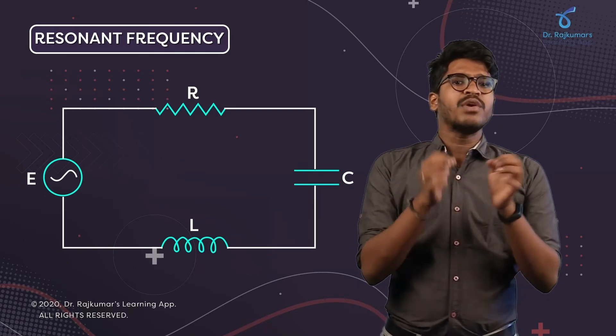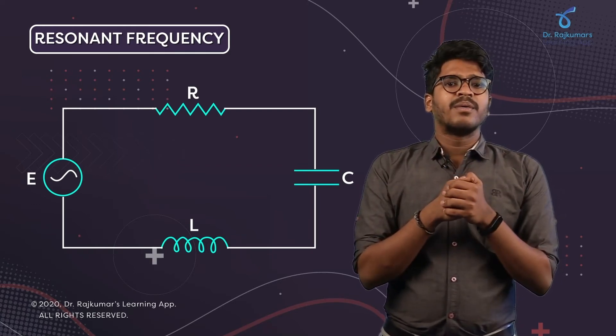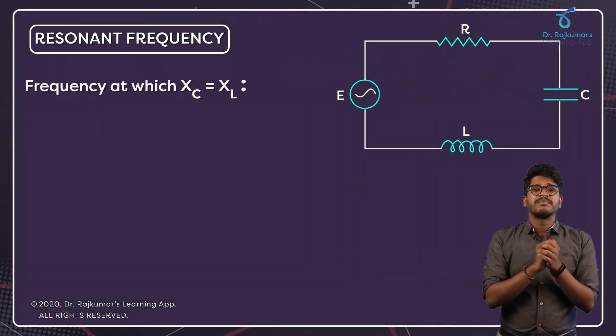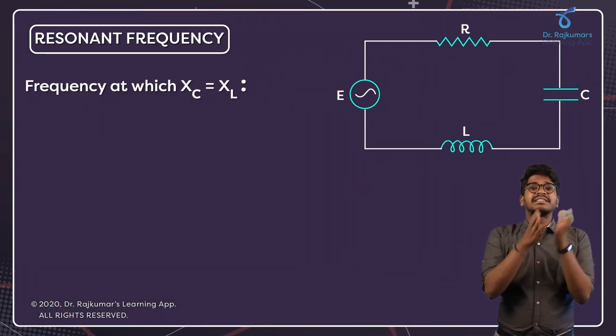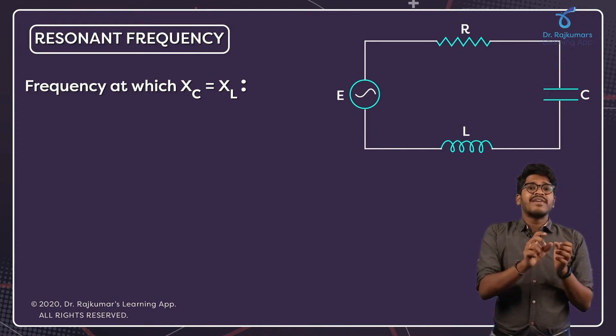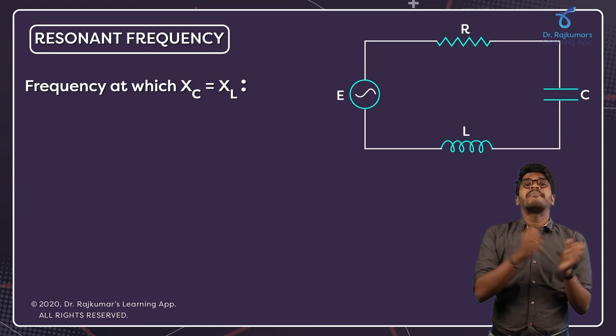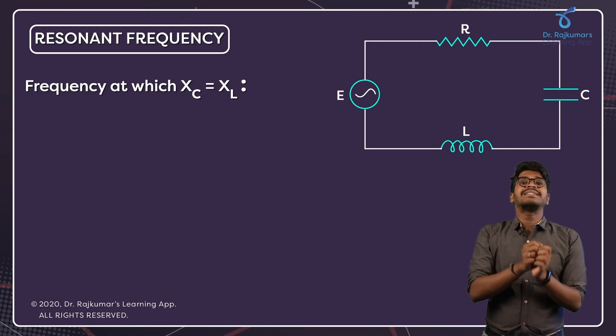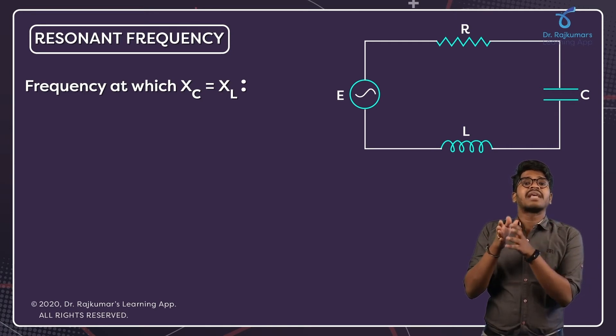After a few experiments, what was observed is there is one particular frequency at which XC was equal to XL. They varied the frequency of the applied voltage and kept varying it, so there was one particular frequency for which XC was equal to XL.